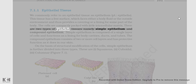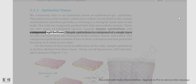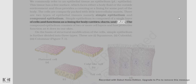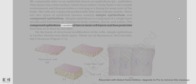There are two types of epithelial tissues: simple epithelium and compound epithelium. Simple epithelium is composed of a single layer of cells and functions as a lining for body cavities, ducts, and tubes. The compound epithelium consists of two or more cell layers and has a protective function as it does in our skin.